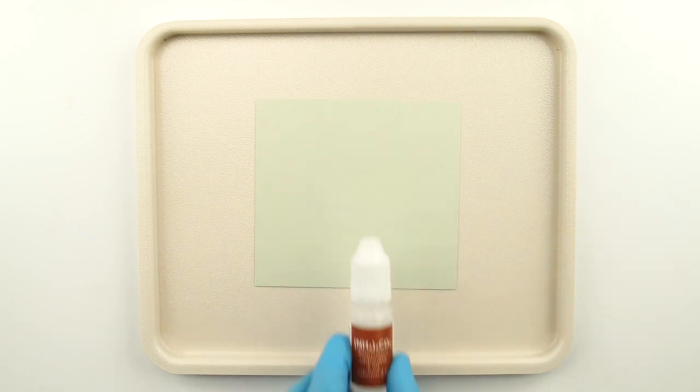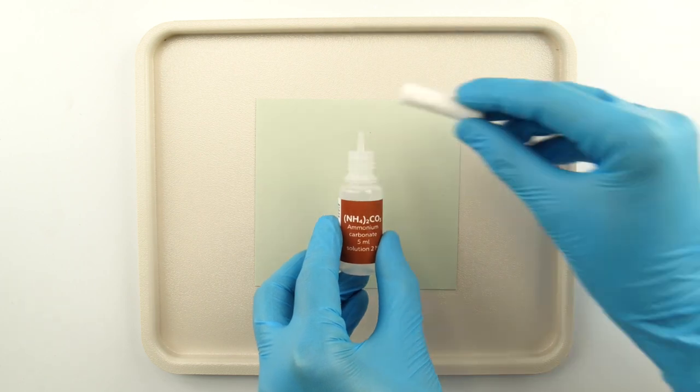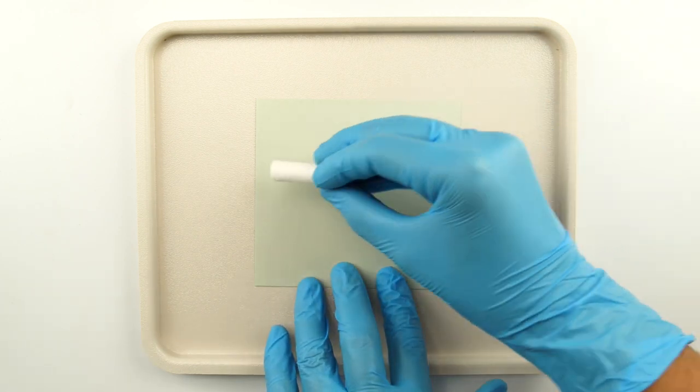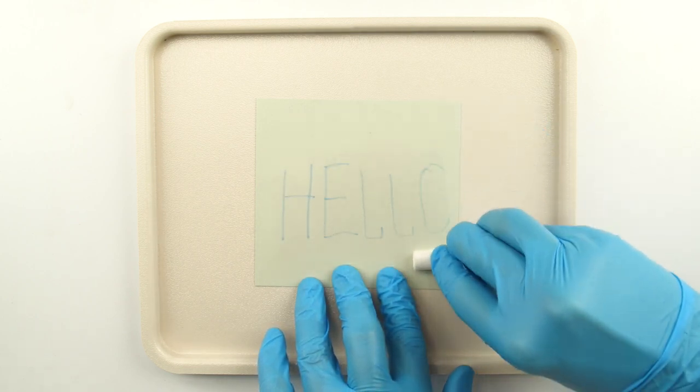Reveal the secret message. Moisten your cotton absorbent with ammonium carbonate solution and rub the absorbent on the piece of paper. Your secret message will be revealed.